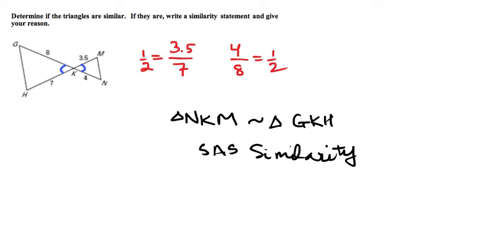So again, the point is we have two sets of proportional side lengths and the angle in the middle that joins them is congruent. So that's enough for us to conclude that the two triangles are similar.